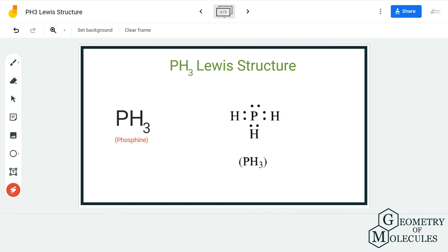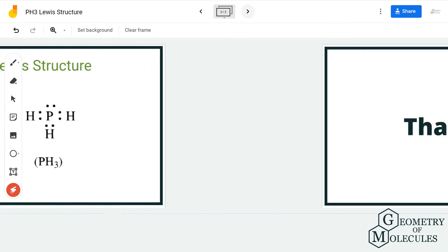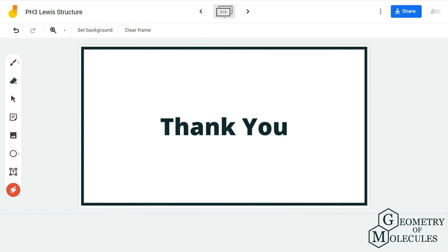So remember, phosphorus forms three single bonds with three hydrogen atoms in PH3 molecule. I hope this video helps you understand that. For more videos on Lewis structure, molecular geometry, and polarity of molecules, make sure to subscribe to our channel. Thanks for watching!